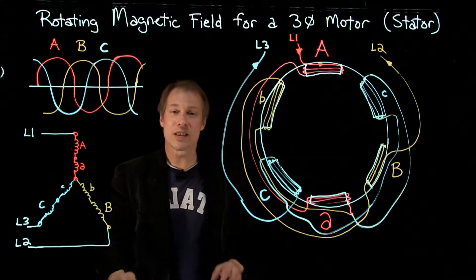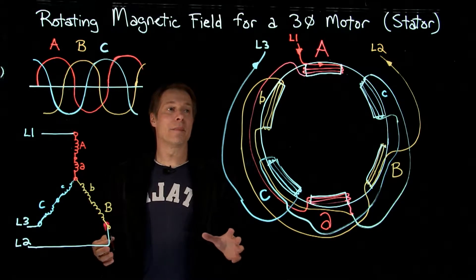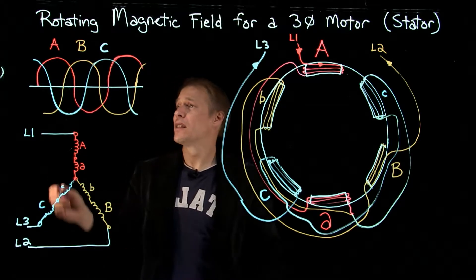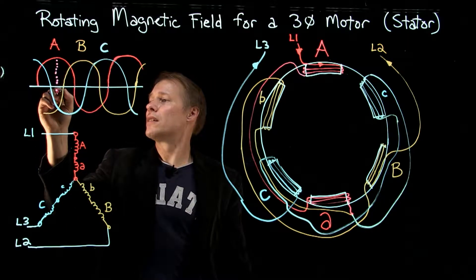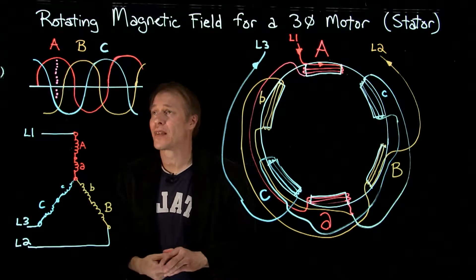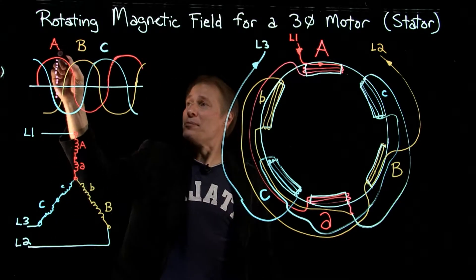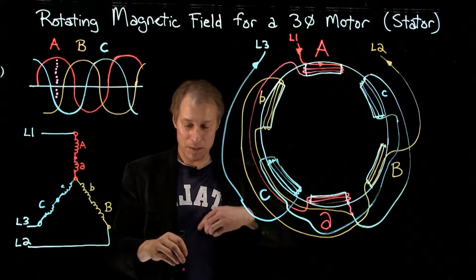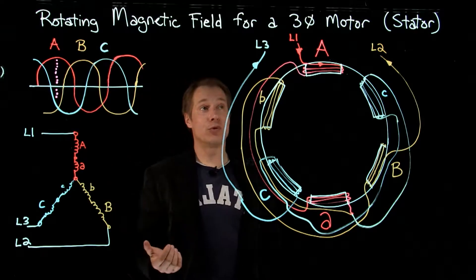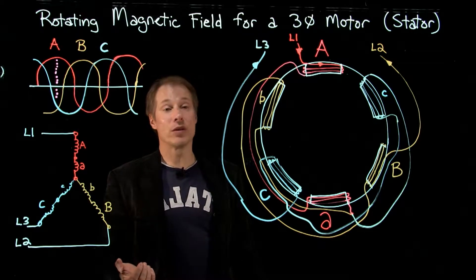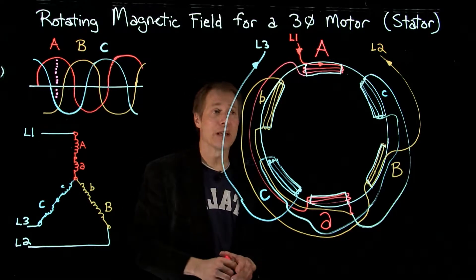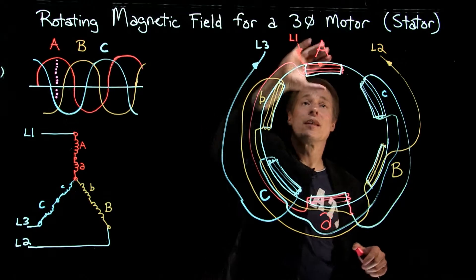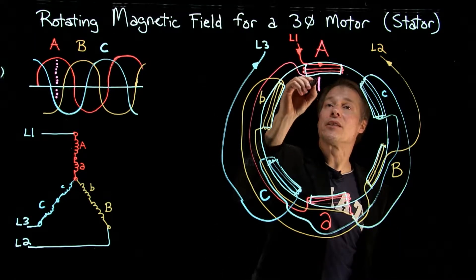What we're going to do is look at a snapshot in time and see what the magnetic pole orientation is. I'm going to choose this point right here where the A phase is at its maximum current, which will give us the maximum magnetic pole. I'm going to use my left-hand rule for coils — that was covered in a previous video. Fingers in current direction, and that gives us the north pole here.